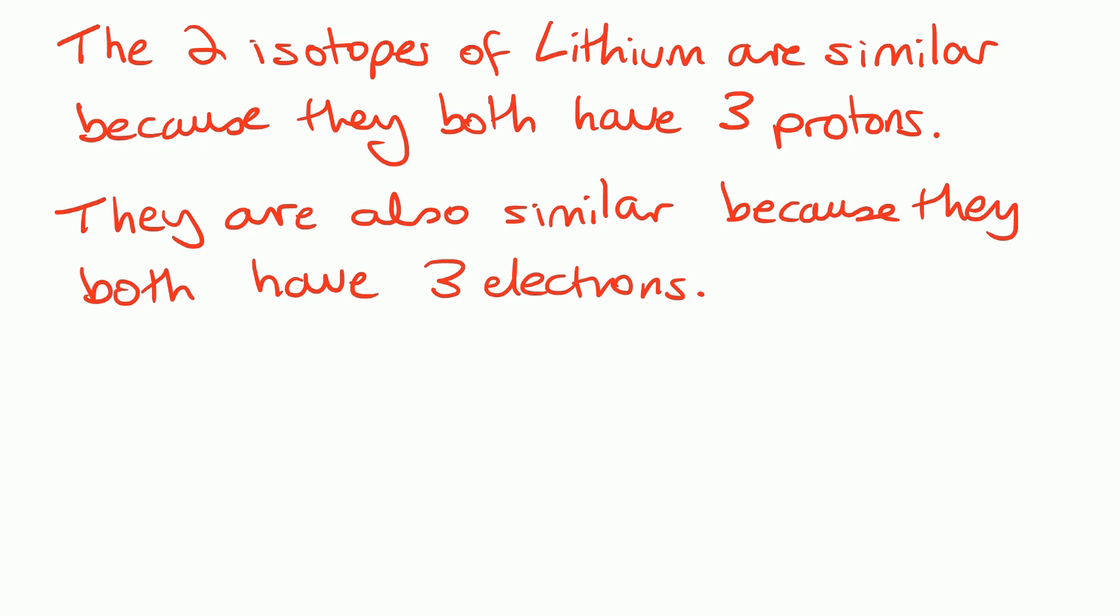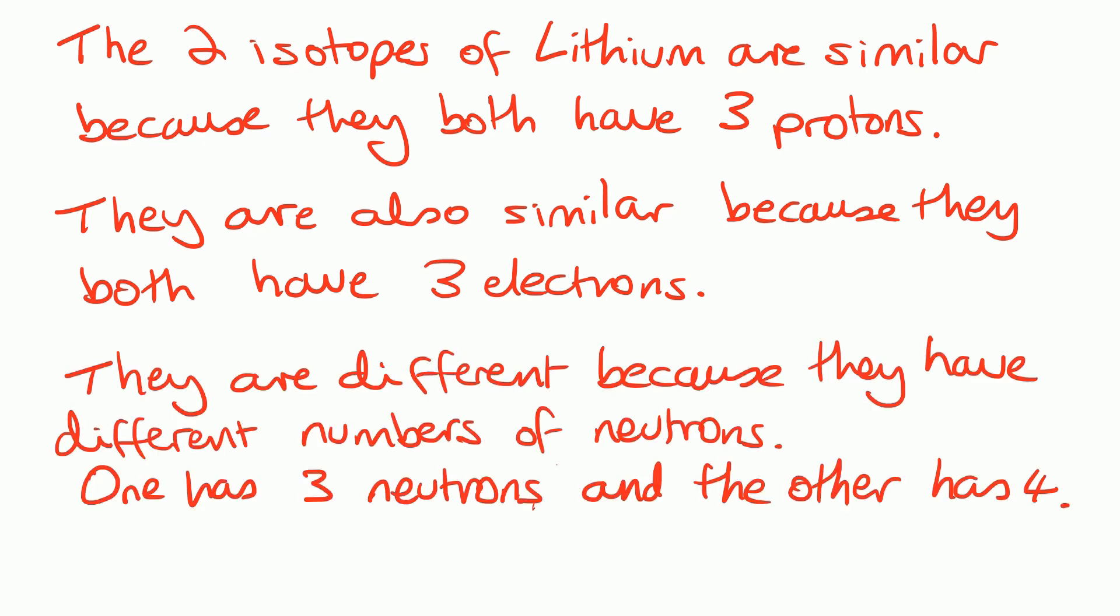And for the third mark, we need to talk about the neutrons. So we can say they are different because they have different numbers of neutrons. One has three neutrons and the other has four.